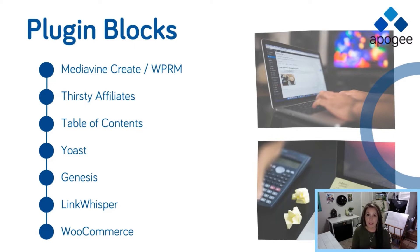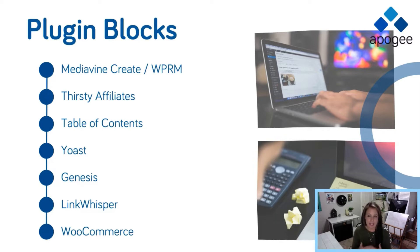Things like your Mediavine recipe card, WP Recipe Maker, Affiliates, Table of Contents, Yoast, Link Whisper, WooCommerce — all of these are now creating their very own blocks that you can easily insert into your content without the need for a bunch of HTML or short codes. This is adding all of the functionality so that your blog can grow with you. You may want to add a shopping cart or do more with affiliate marketing — the block editor makes that very, very simple. It is the functionality of Gutenberg that makes it so appealing.